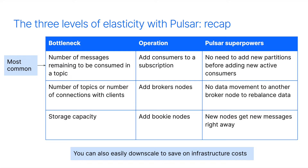Here is a recap of the three levels of horizontal scalability and the benefits compared to other streaming platforms. When your most common bottleneck is the consumer, the advantage of Pulsar is that scaling consumers doesn't require complex operations like adding partitions. If your bottleneck is the processing power, you just add new broker nodes without the need for data movement. Additionally, if storage capacity is the limiting factor, adding new bookie nodes resolves the issue, and unlike other platforms, these nodes immediately receive new messages. And of course, you can easily downscale to save on infrastructure costs.